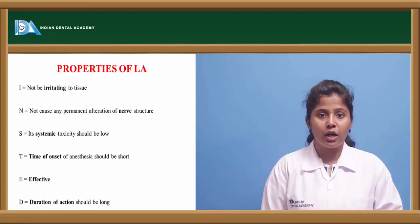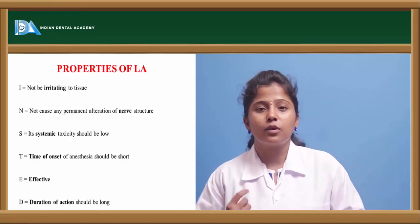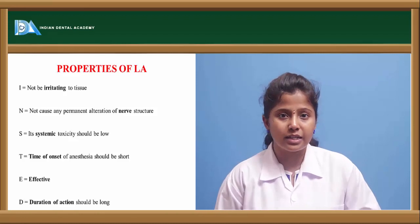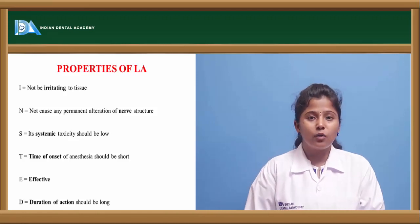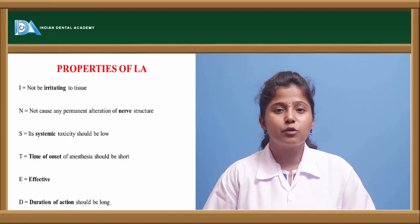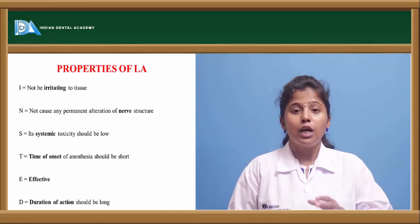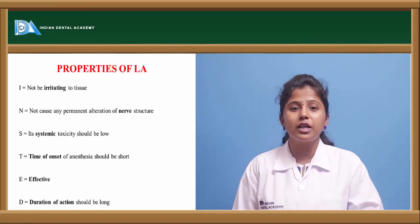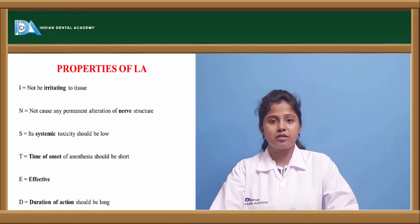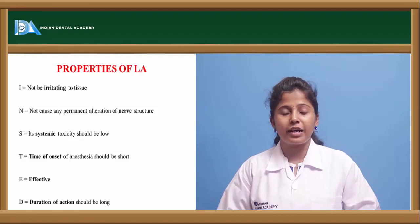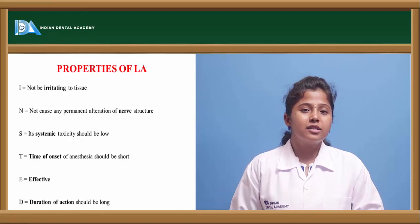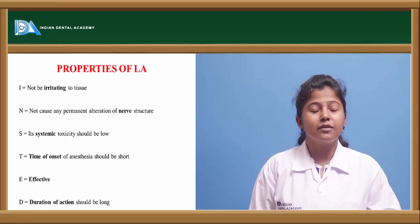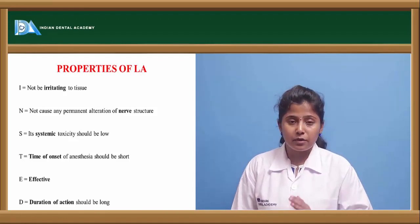'D' means duration of action should be long. For example, if a person is having minor surgery that does not require general anesthesia, we apply local anesthesia to the particular area. The duration of local anesthesia must be sufficient for the surgery. If the local anesthesia has a short duration of action and the localized area regains sensation before completing the surgery, the person may feel pain. So it should have enough duration of action to finish the procedure.